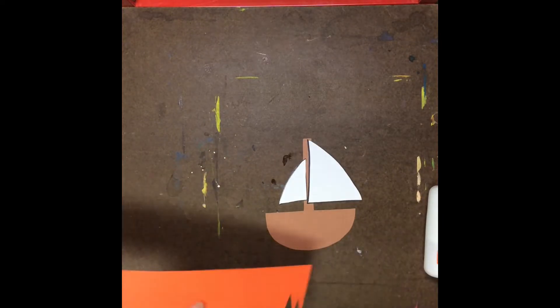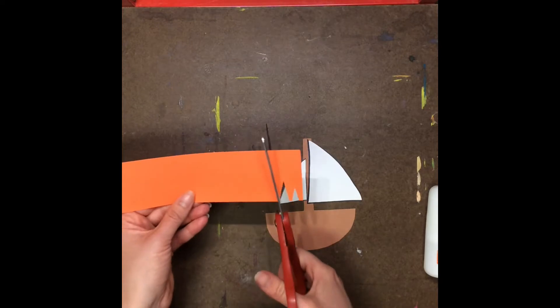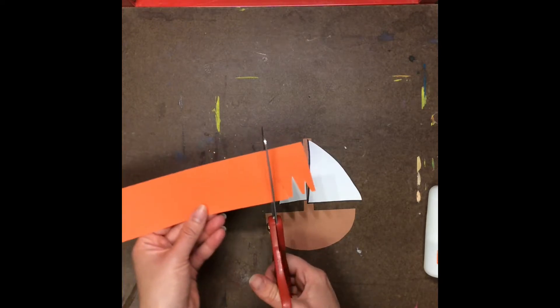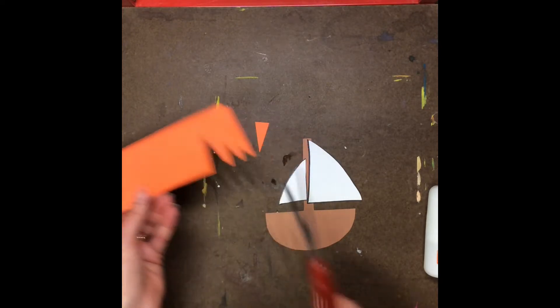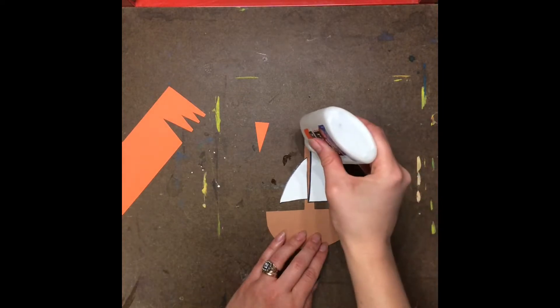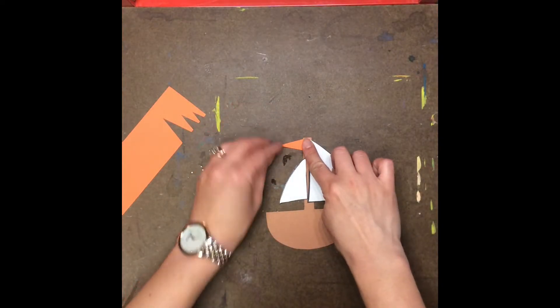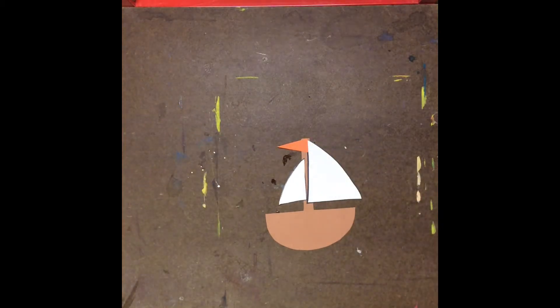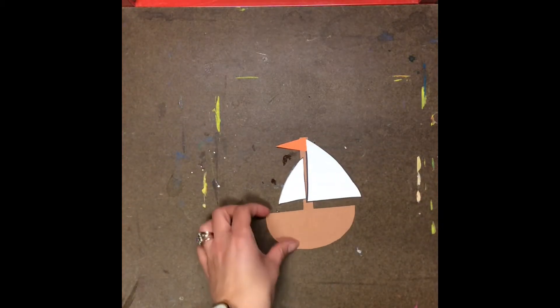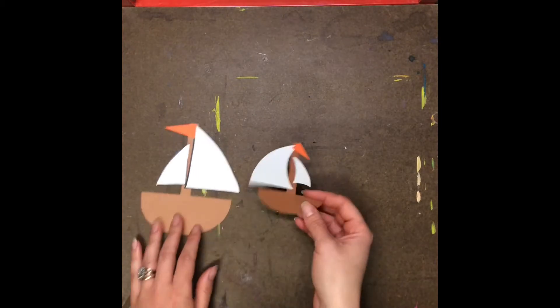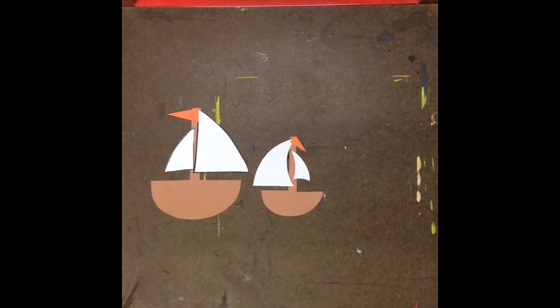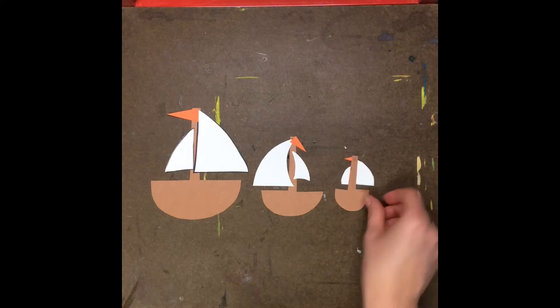Sometimes I like to add extra details from the scrap box. Like this boat's going to have a bright orange flag right on top. Just like that. I have my big boat all finished and next I would need to do my medium boat and my small boat.